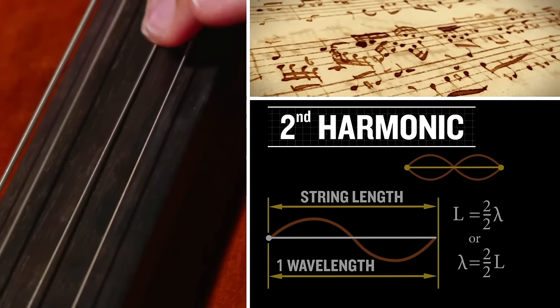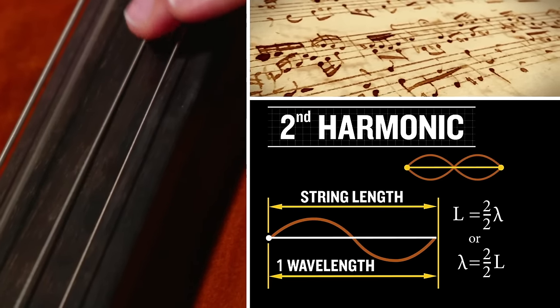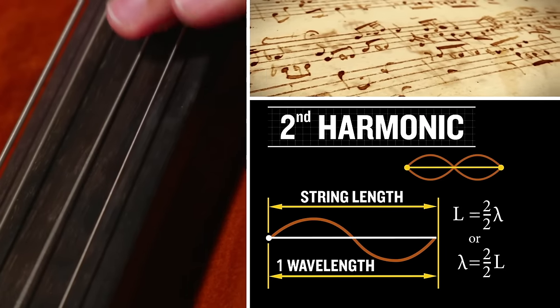The second harmonic is produced by holding the string down in the middle. The length of the string equals one wavelength.